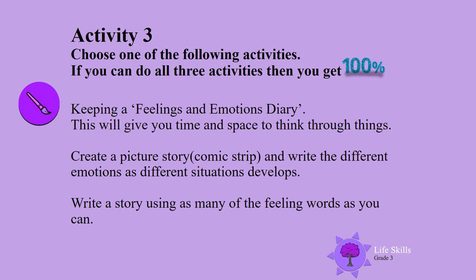Activity three: Choose one of the following activities — if you can do all three, you get a hundred percent! First, keep a feelings and emotions diary; this gives you time and space to think things through, and it is private so no one else will see it. Second, do a picture story like a comic strip and write the different emotions as situations develop. Third, write a story using as many feeling words as you can. Good job, boys and girls!